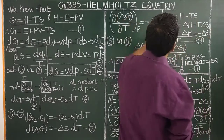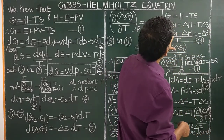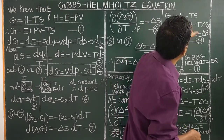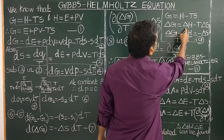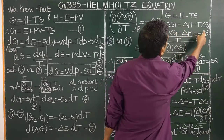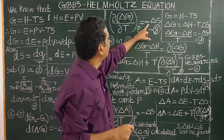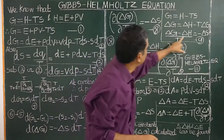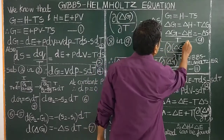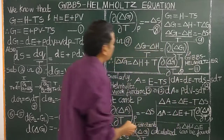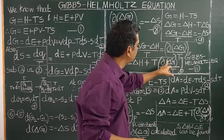G equals H minus TS, so delta G equals delta H minus T delta S. Since the partial derivative of delta G with respect to T at constant pressure equals minus delta S, we substitute: delta G minus delta H divided by T equals the partial derivative of delta G by dT at constant pressure. Therefore, on rearranging: delta G equals delta H plus T times the partial derivative of delta G by dT at constant pressure.